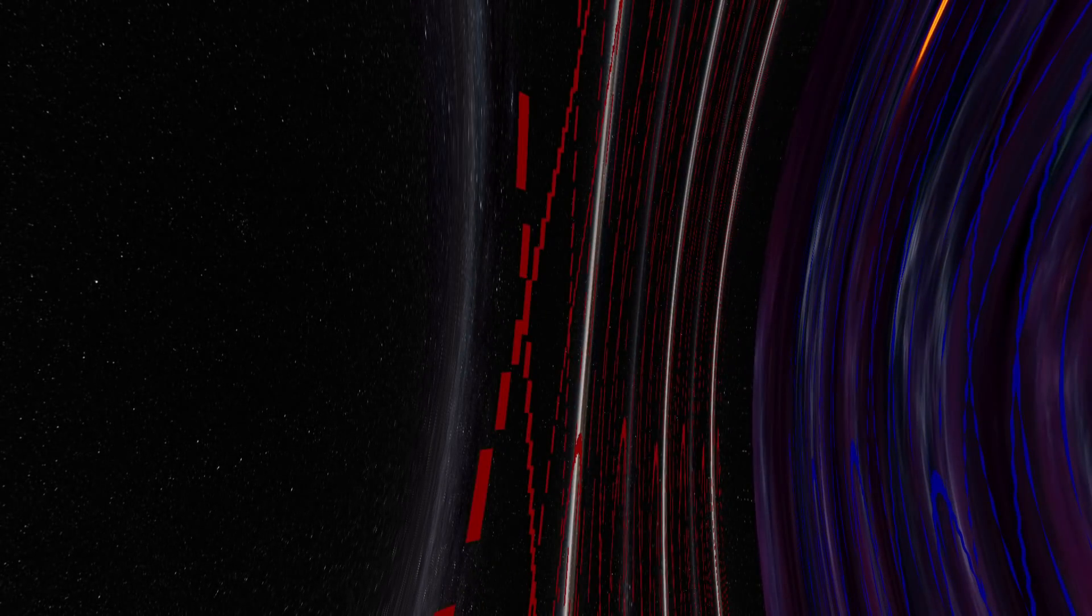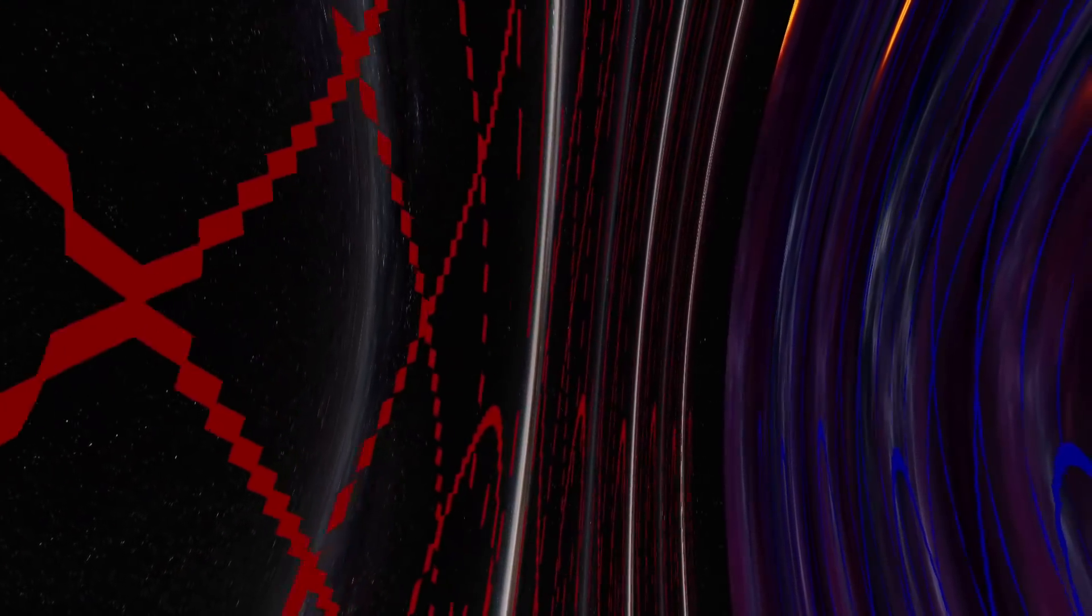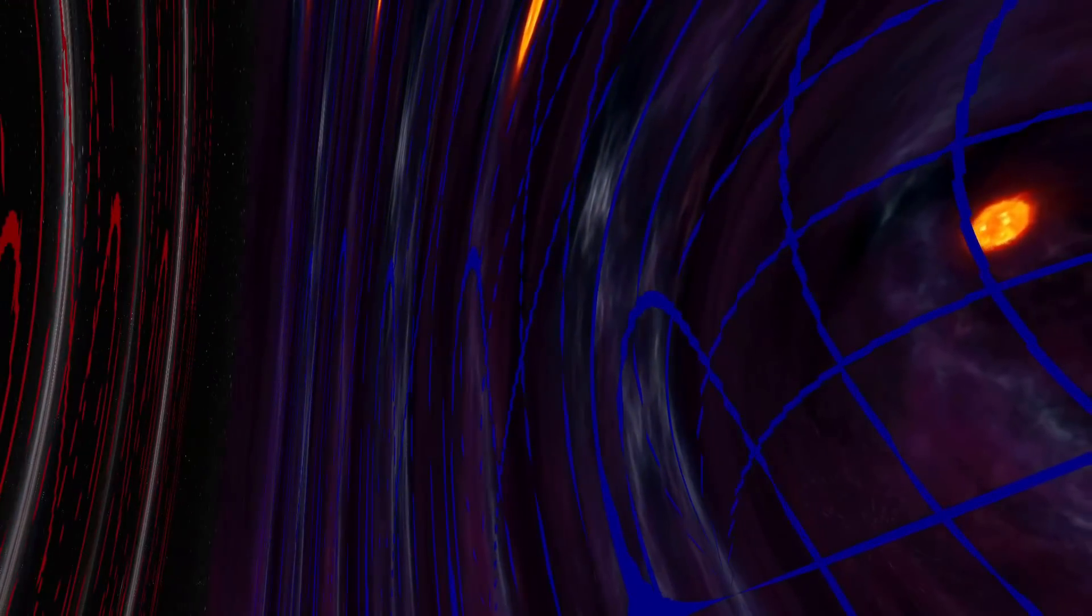As I pass these red lines, that means that I'm passing the event horizon of the first side of the wormhole. The blue is the other side of the wormhole. So now as I go through the throat, I'm passing into the other side of the wormhole.